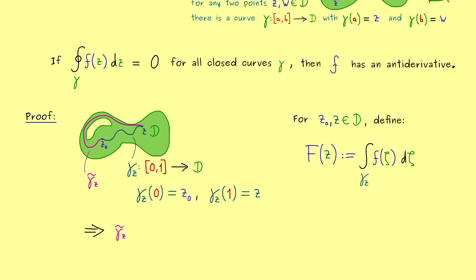Then, in order to form a closed curve, we have to go backwards for the curve gamma tilde. And indeed, this is something we have denoted with a minus sign in the upper index. Moreover, let's denote the combination of both curves with a plus sign.